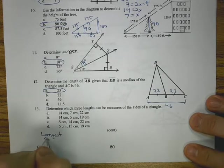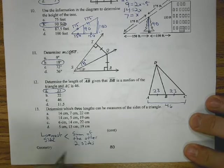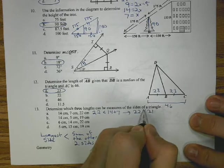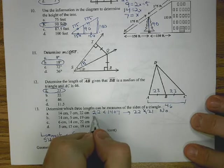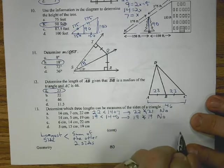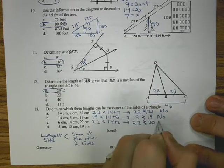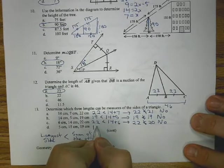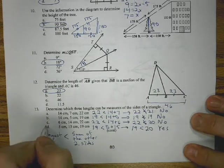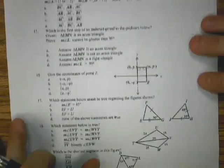For number 13, determine which length can be measured for the sides of the triangle. So here we're looking at the longest side is less than the sum of the other two sides. 22 less than 14 plus 7 gives us 22 less than 21, that's not true. 19 less than 14 plus 5, that's 19 less than 19, not true. 22 less than 14 plus 6 gives us 22 less than 20, not true. Last one, 19 less than 5 plus 15 gives us 19 less than 20. That's a true statement, so D is our answer.